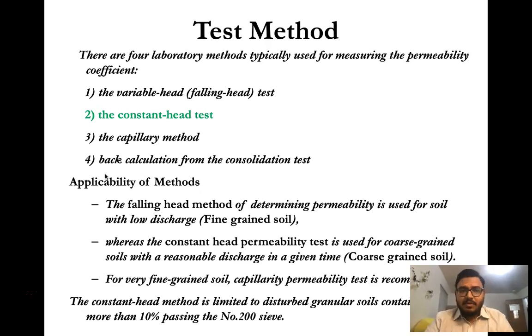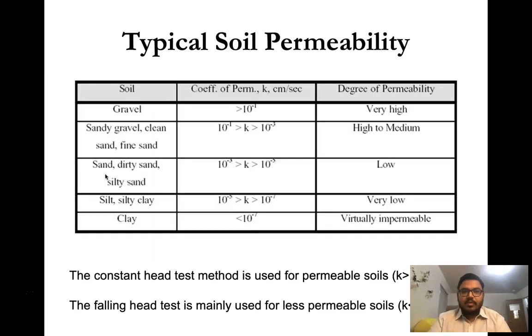Among them, the variable head method or falling head method and the constant head method are the most popular. The falling head method can be applied for soil with low discharge, that means fine-grained soil, whereas the constant head method can be applied for coarse-grained soil. The constant method is limited to disturbed granular soil containing not more than 10% passing the number 200 sieve.